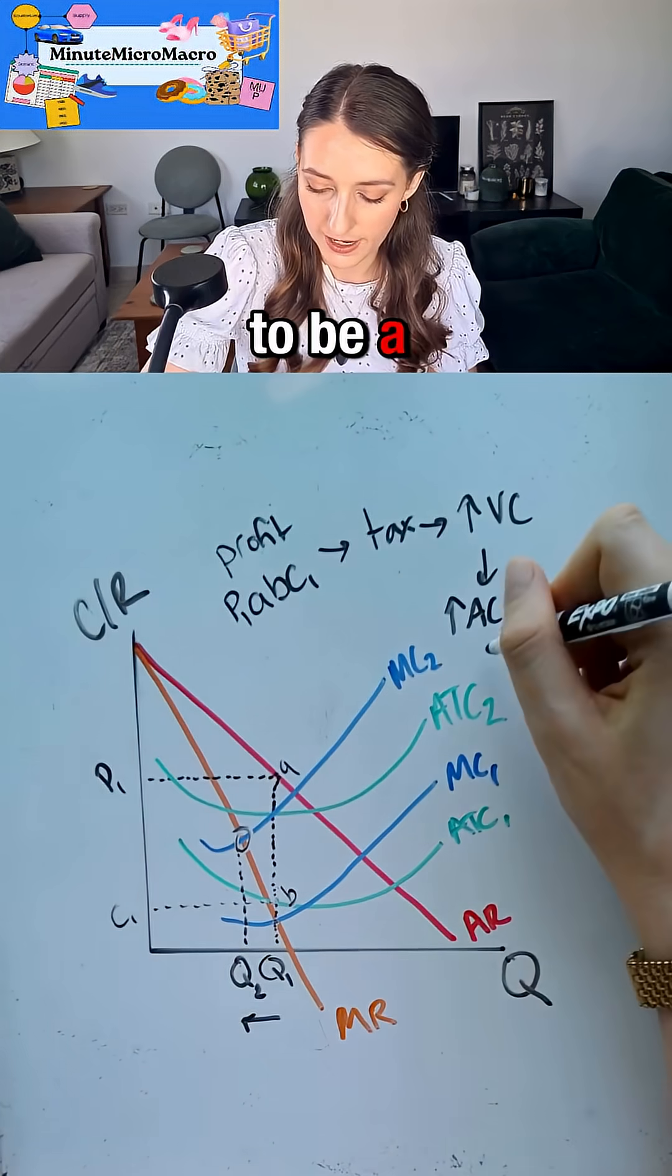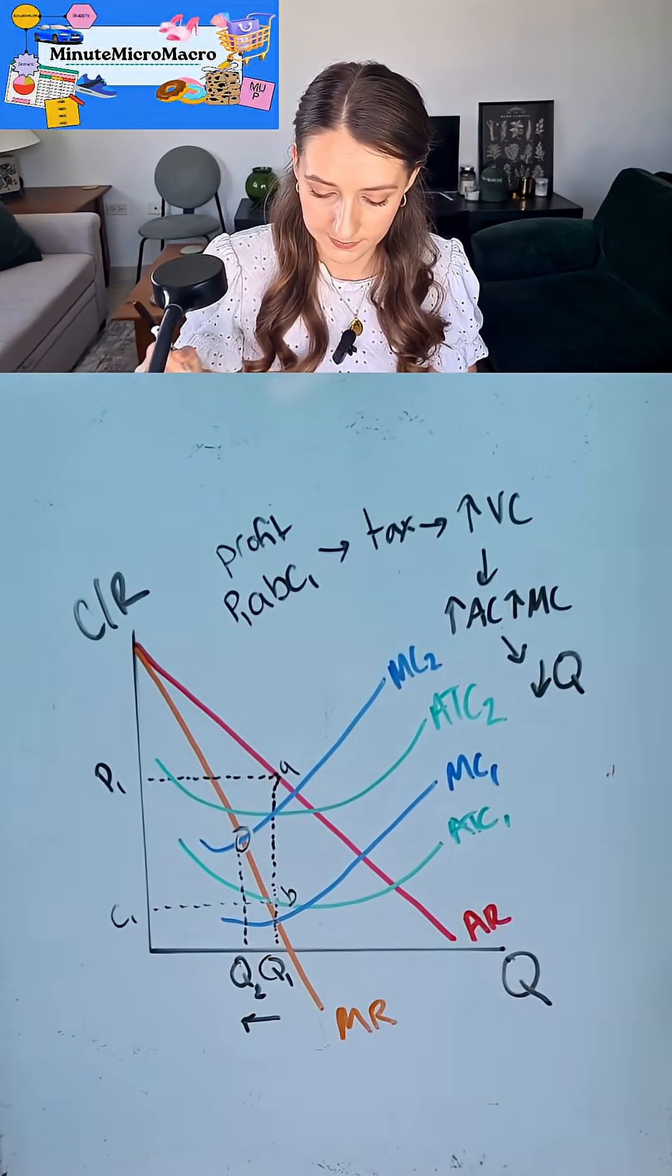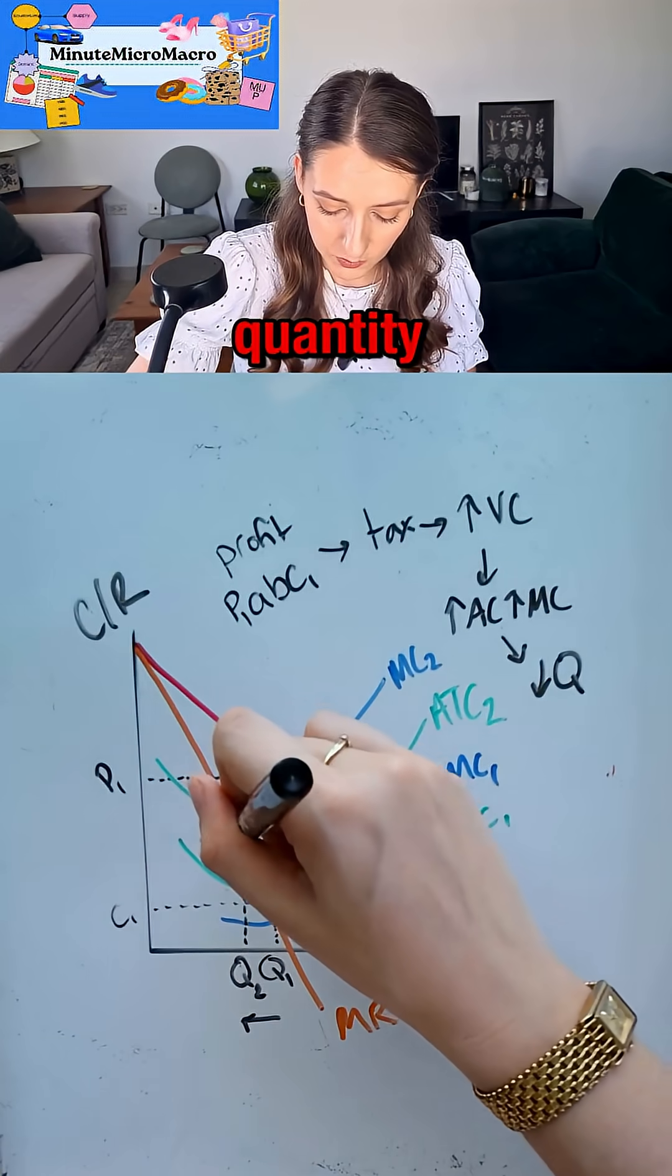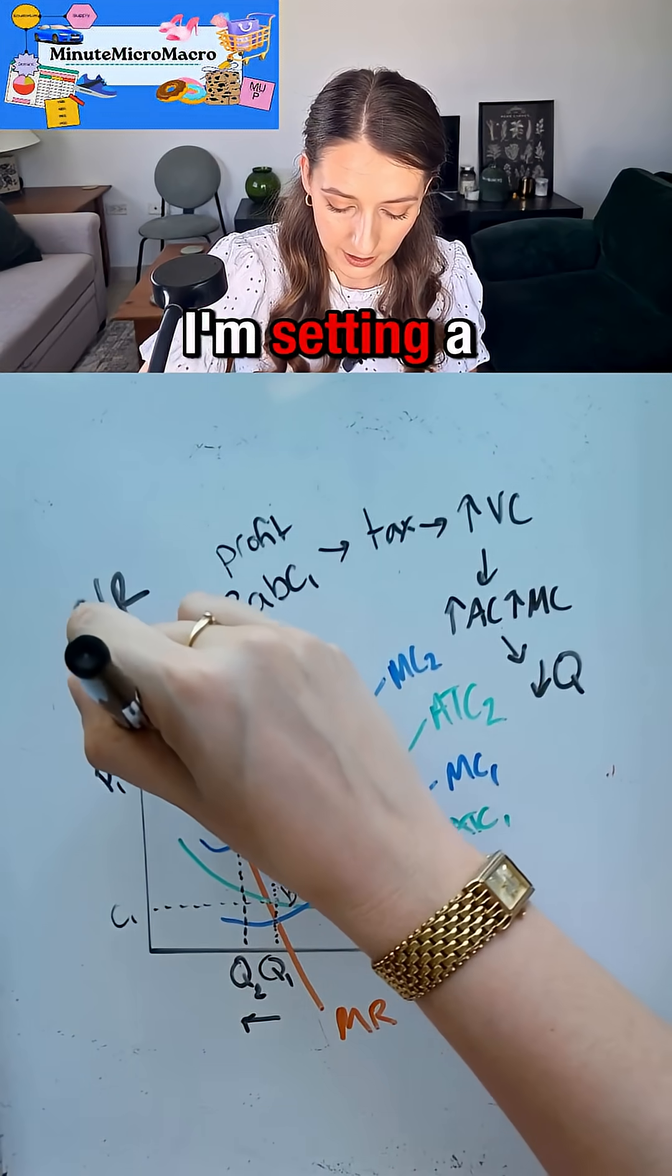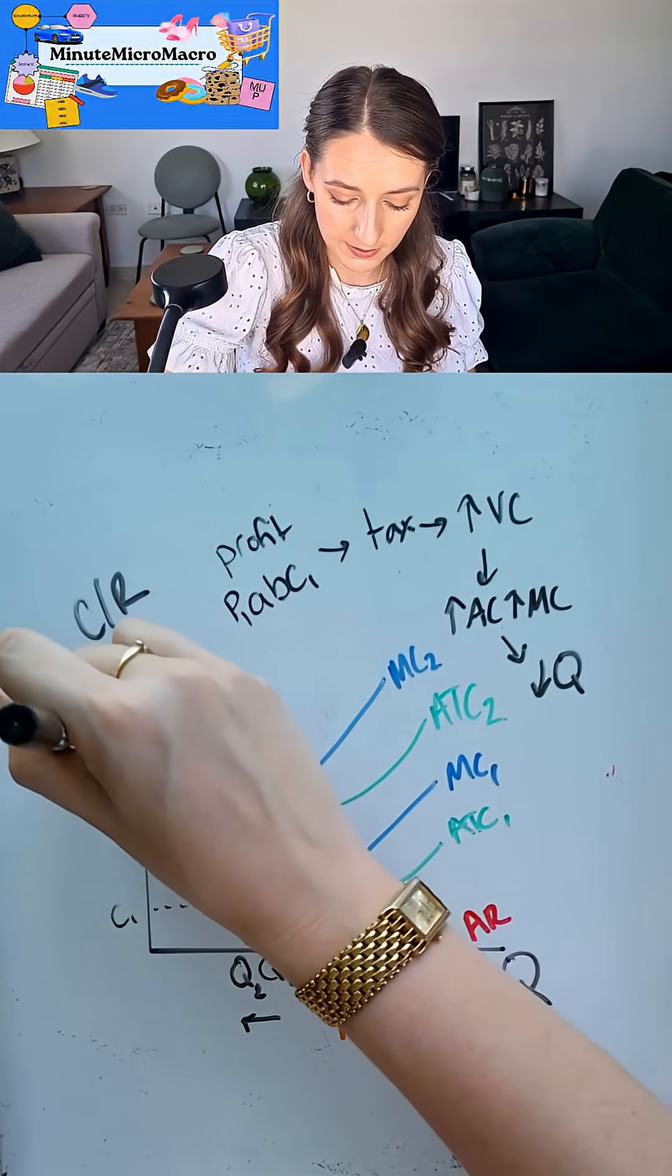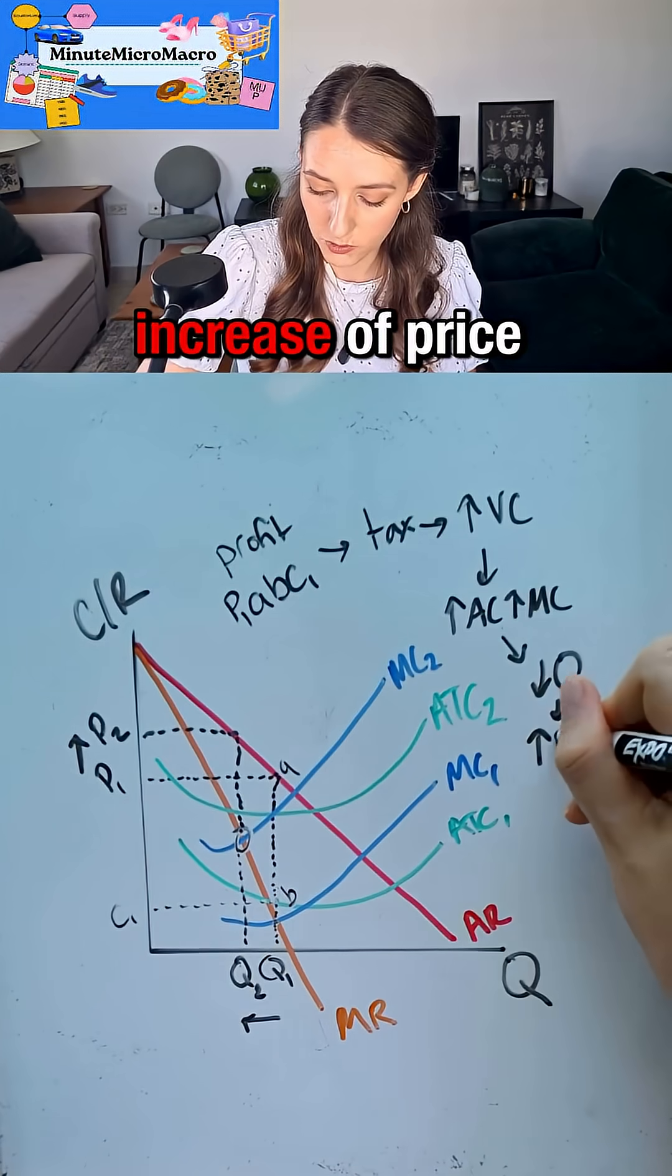So I can see there's going to be a fall in quantity. If I read up from the quantity until I hit average revenue, I'm setting a new price at P2—there's been an increase of price to P2.